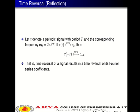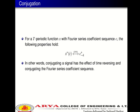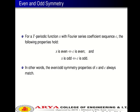Time reversal: If X(t) →(CTFS) Cₖ, then X(−t) →(CTFS) C₋ₖ. That is, time reversal of a signal results in a time reversal of its Fourier series coefficients. Conjugation: For a T-periodic function X with Fourier series coefficient sequence C, X*(t) →(CTFS) C*₋ₖ. In other words, conjugating a signal has the effect of time-reversing and conjugating the Fourier series coefficient sequence.